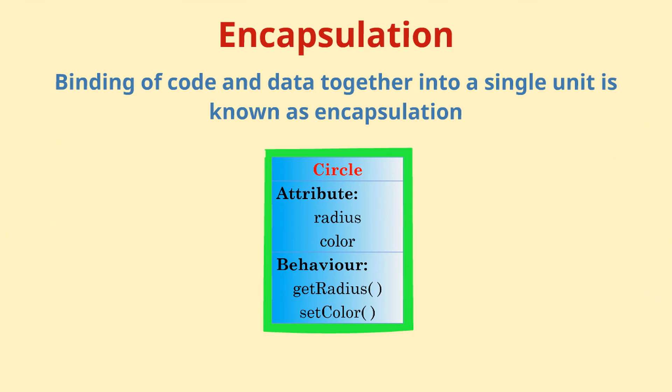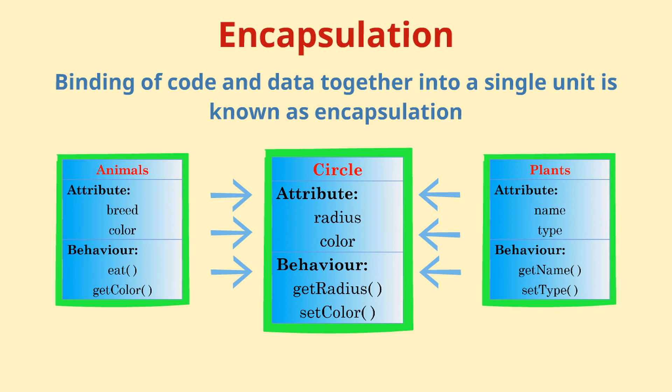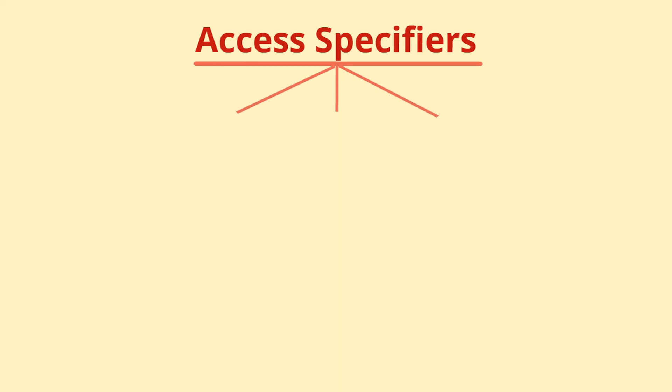In encapsulation, the data in a class is hidden from other classes, so it is also known as data hiding. Java classes enforce these access restrictions explicitly by using access specifiers of public, private, and protected.